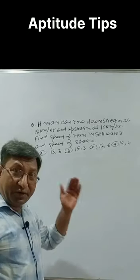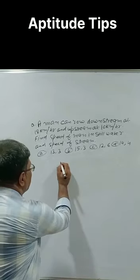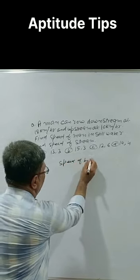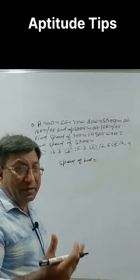Simple question when downstream speed and upstream speed are given. The simple technique is: speed of boat equals downstream speed plus upstream speed divided by 2.